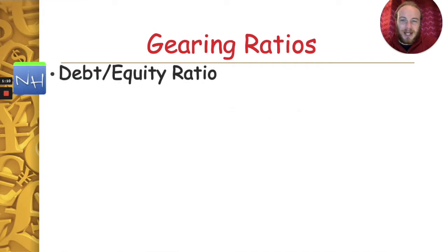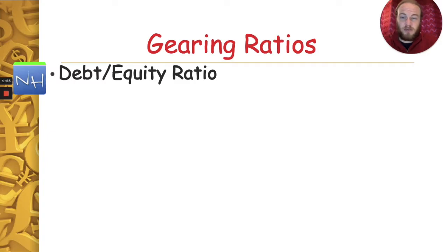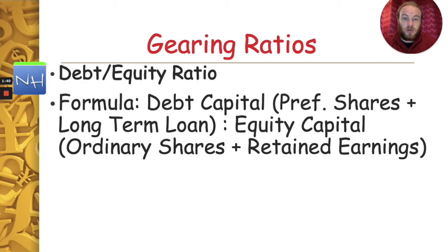So our debt equity ratio — if we break that down — debt is when we borrow money and how much we owe, and equity is another word for control or ownership. So it's the amount of loans versus the amount of ownership. Our formula is quite simply debt capital to equity capital. Capital is another word for money, so debt capital means how much money we've borrowed versus equity capital, how much money we've raised through selling ownership.